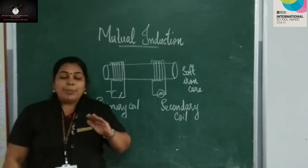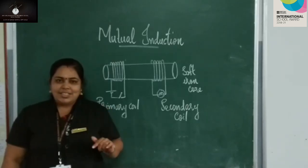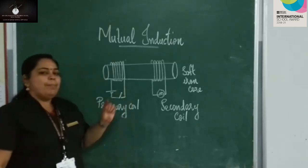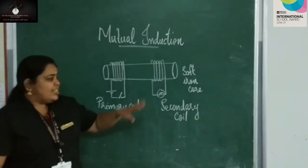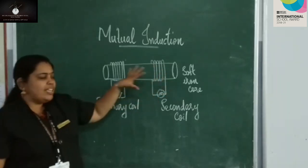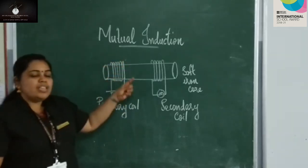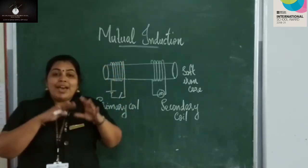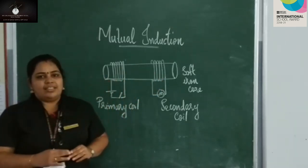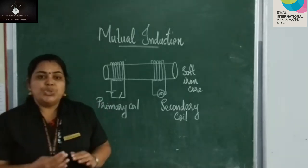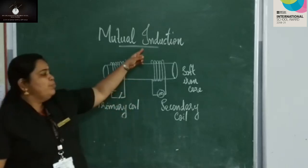When you turn the switch on and off, there is a change in the magnetic flux in the primary coil. Magnetic flux is changing continuously. And the secondary is situated in this varying magnetic field. Current passes in the primary coil, creating a magnetic field. The secondary is in a varying magnetic field. As a result, an EMF is induced in the secondary. That phenomenon is known as mutual induction.